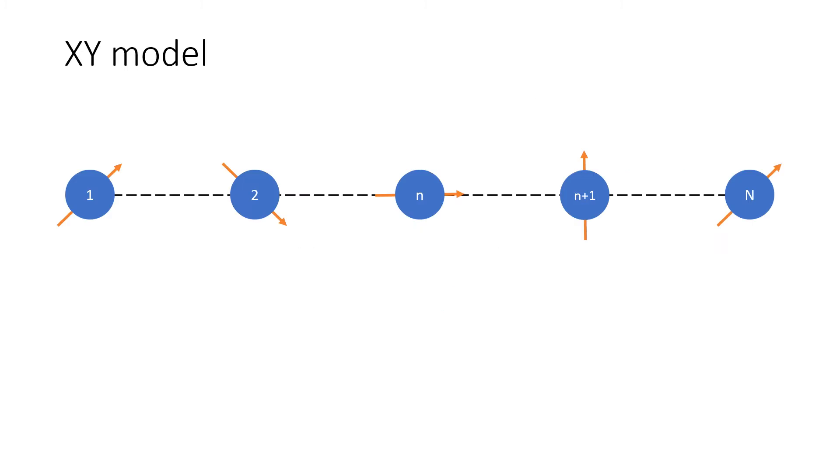One of the common models studied for entanglement is the XY model. It is a one-dimensional half-spin chain, and each lattice site possesses a two-dimensional spin variable taken to be in the X and Y directions.